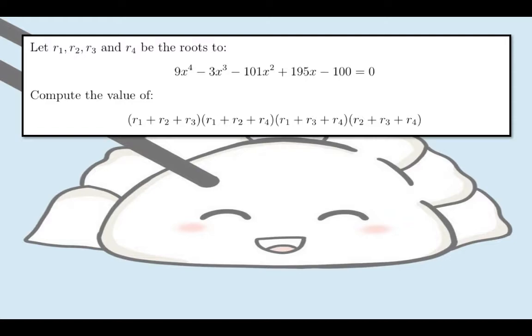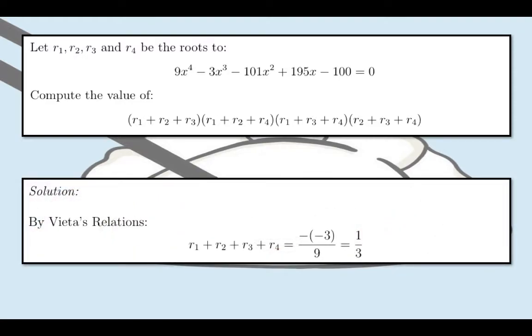Let us dive into the solution. The first step is kind of obvious. By Vieta's relations, we will be able to get the sum of the four roots. We will get that r sub 1 plus r sub 2 plus r sub 3 plus r sub 4 equals negative of negative 3 all over 9. And this equals 1 third.